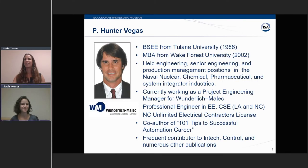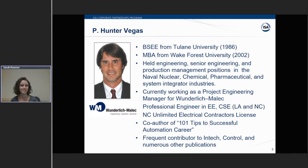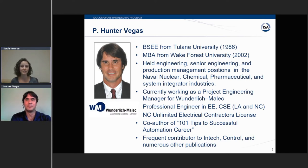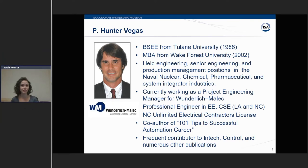Thank you, Katie. So first off, we have Hunter Vegas. He's worked in the automation industry for over 30 years and has executed over 2,000 automation projects in nuclear, pulp and paper, and specialty chemical industries. He's a frequent contributor to several controls magazines and recently co-published his first book, 101 Tips for a Successful Automation Career with Greg McMillan. Hunter currently works for Wunderlich-Malick as a project engineering manager and lives in North Carolina.